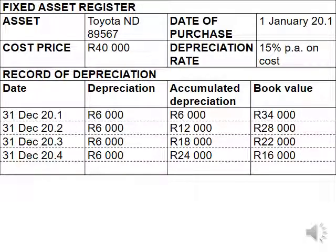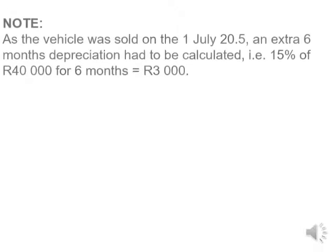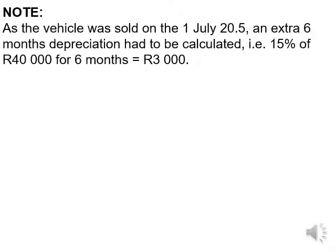We also need to update the fixed asset register. The last entry was on the 31st of December 2004. We have updated the depreciation on the 1st of July with $3,000, which means the total accumulated depreciation is $27,000 and the book value on that date is $13,000. Note that as the vehicle was sold on the 1st of July, an extra 6-month depreciation had to be calculated.